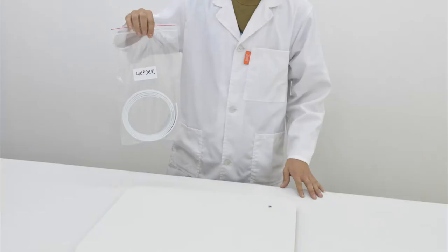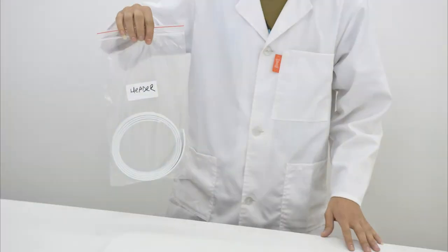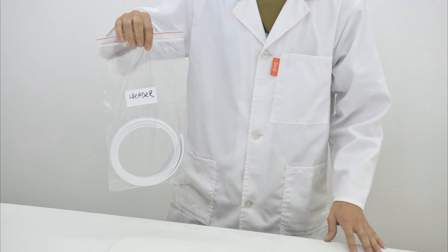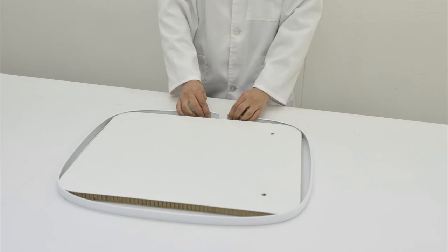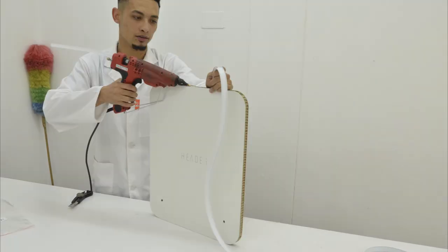The next step is to apply the edging provided in the packet and marked for which part it is to be applied. On this unit we start with a header. First lay the header down on your table and run the edging all around to make sure it's a good fit.